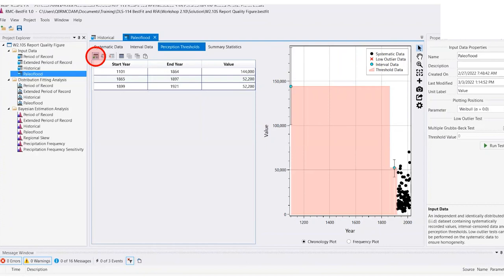Values for each perception threshold can then be added to the table either manually or by copying and pasting from another application. You'll probably just be hand-typing these in because you're not going to copy a whole bunch. Each perception threshold requires a time period defined by a start year and the end year along with the threshold type. Chronology plots will automatically update as you enter the threshold information.